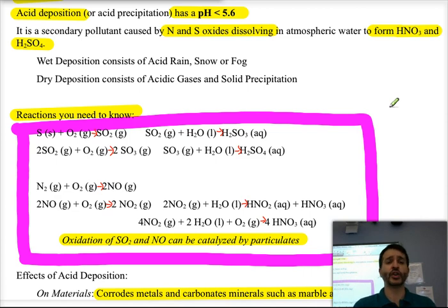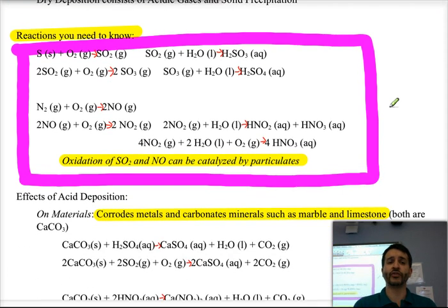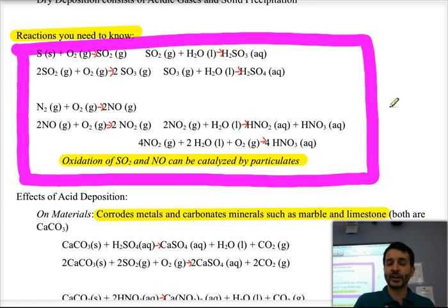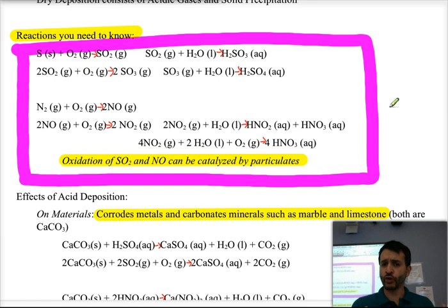There are key reactions to know about how these secondary pollutants are formed. Sulfur reacts with oxygen to give sulfur dioxide (the primary pollutant), then SO2 reacts with water to give sulfurous acid (H2SO3). Additionally, SO2 can react with oxygen to give sulfur trioxide, which reacts with water to give sulfuric acid (H2SO4). Both sulfurous acid and sulfuric acid are highly corrosive, with sulfuric acid being a strong acid.